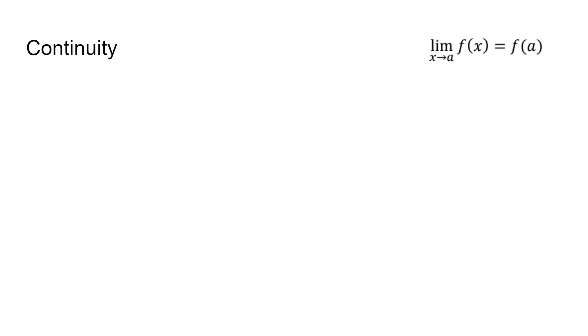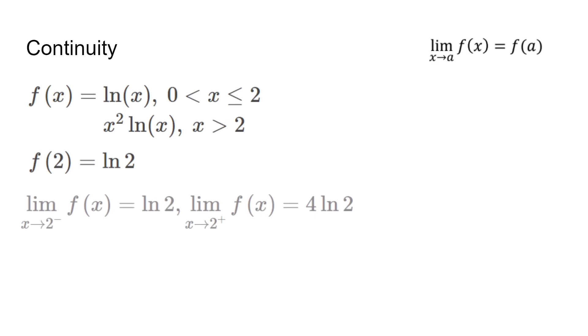Continuity is guaranteed when the limit equals the point. Given this piecewise function, we can test its continuity by finding f of 2. We plug in x equals 2 to the function that has 2 in its domain. We find the limit from the left and from the right, and they are different. The limit does not exist, and this does not equal 2. That means the piecewise function is not continuous.